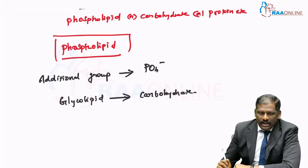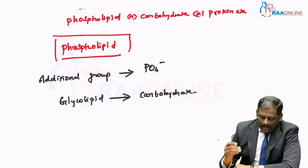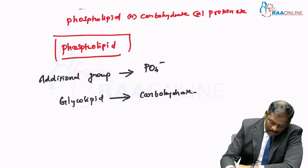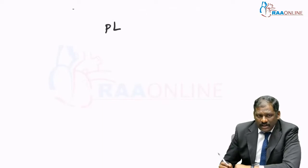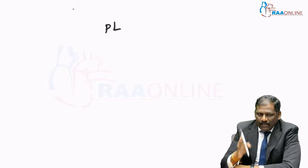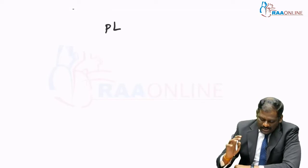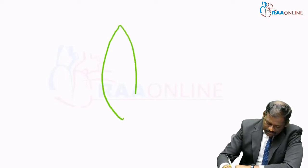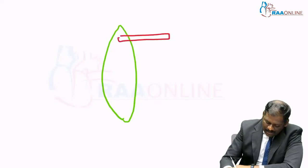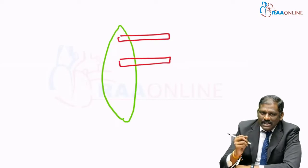Now we will see the classification of phospholipids. You classify them with respect to the central alcohol which acts as a backbone for these complex lipids. The structure of complex lipids is something like this — they have got some central alcohol, and to this central alcohol you have fatty acids which are getting attached.